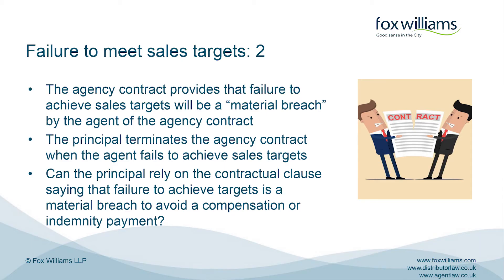So that's the scenario where you have an agency contract which provides the agent has to achieve sales targets but doesn't say anything about the consequences. If you're the principal and you want to terminate, you need to show a repudiatory breach. In the second scenario, the agency contract provides that a failure by the agent to achieve sales targets will be a material breach of the agency contract.